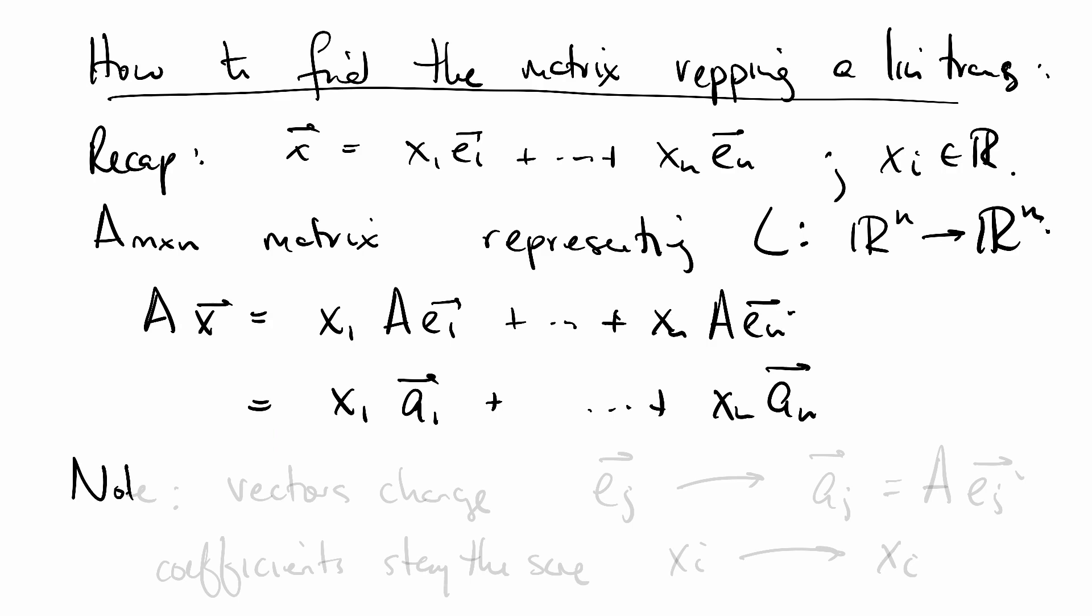Note that the vectors change. As in E_j in the expression, as we move from X to AX, the vectors change. E_j gets replaced by A_j, which is A times E_j. But the coefficients stay the same. The coefficients are the X_i before and the coefficients are X_i afterwards.